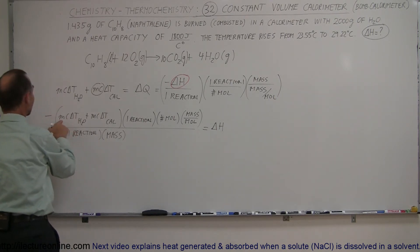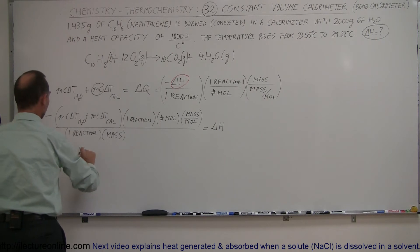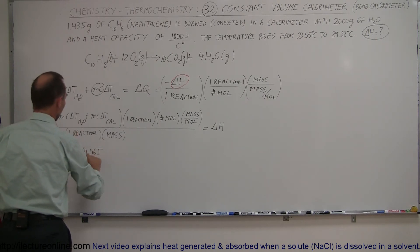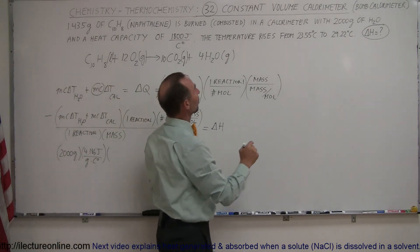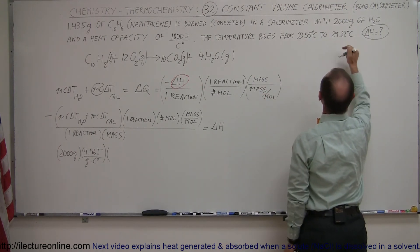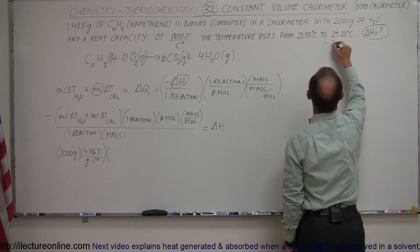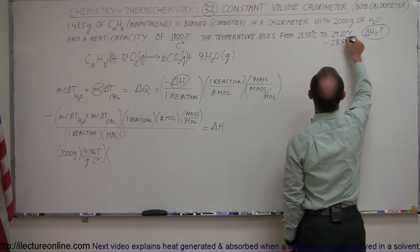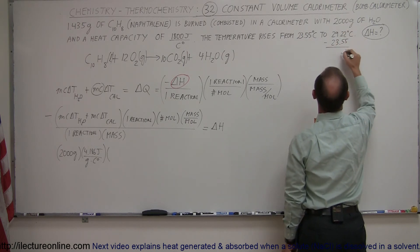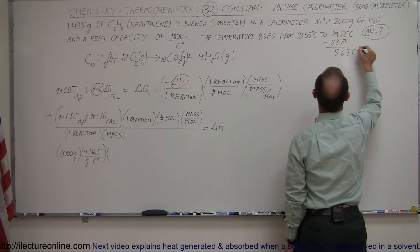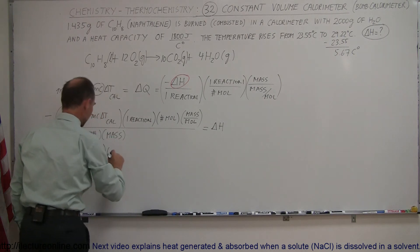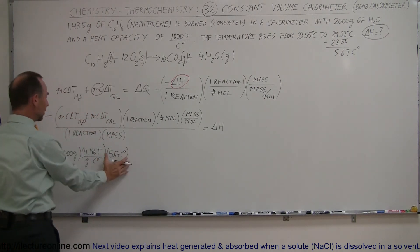Now we're ready to plug in some numbers. Mass of the water: 2,000 grams. The specific heat of the water: 4.186 joules per gram per centigrade degree. The change in temperature: we went from 23.55 to 29.22. So let's do a quick subtraction. 29.22 minus 23.55, so 12 minus 5 is 7, 11 minus 5 is 6, 8 minus 3 is 5, so 5.67 centigrade degrees for the change. That goes in here, 5.67 centigrade degrees. This is the heat absorbed by the water.